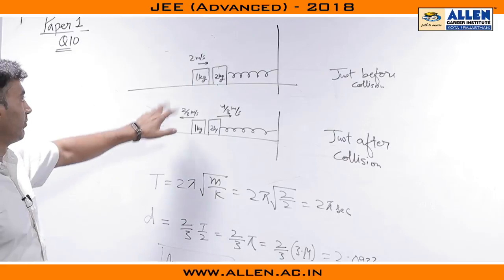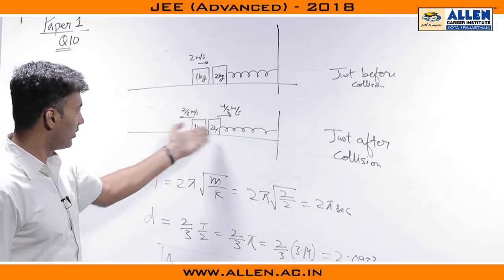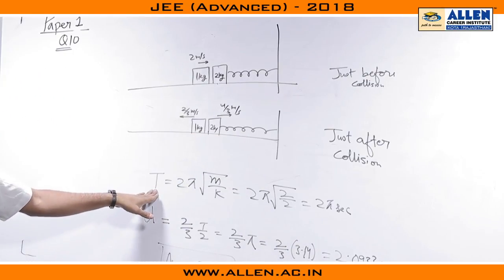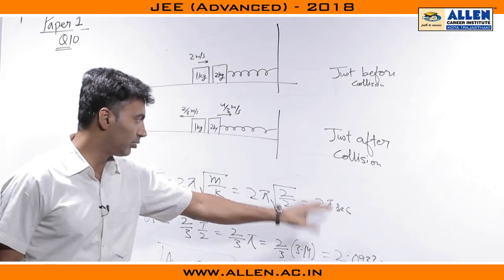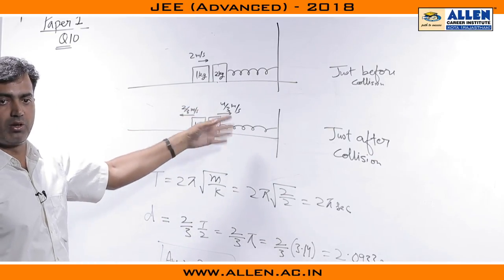Paper 1, question number 10. The 1 kg block was supposed to come and collide with the 2 kg block, which in turn had to perform SHM with time period given by 2 pi root 100m by k, equals 2 pi seconds. Now, we must observe the spring is applying a non-impulsive force.